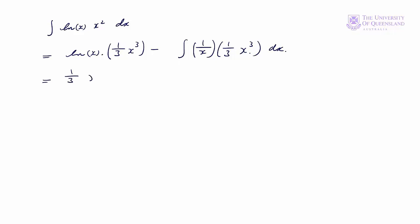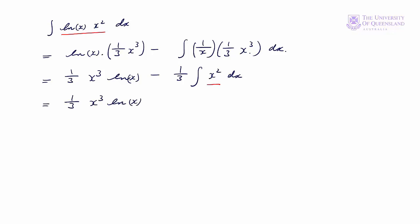We can rearrange and simplify: we have (1/3)x³·log(x) minus, taking the 1/3 outside the integral and cancelling through the x, we get (1/3)∫x² dx. We've achieved our objective — this integrand is much simpler than the original. That equals (1/3)x³·log(x) minus (1/9)x³ plus c. Simplifying further: (1/3)x³·(log(x) − 1/3) + c.